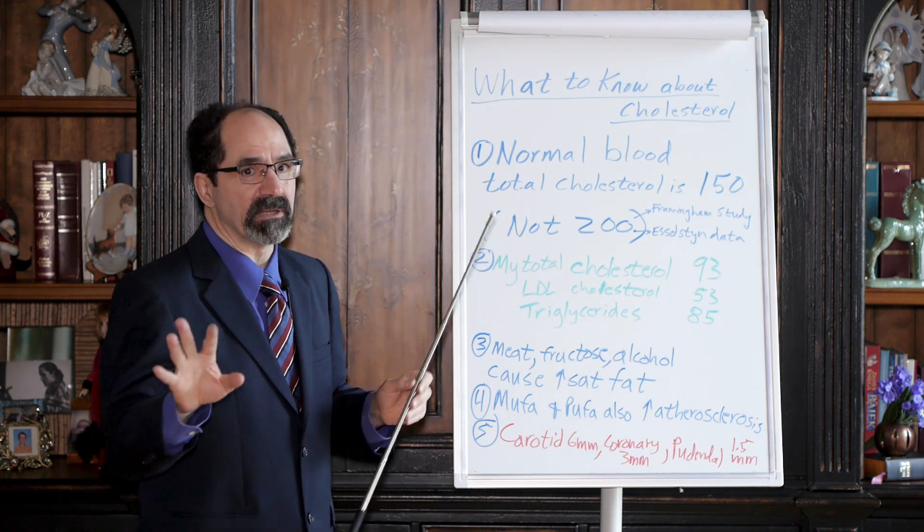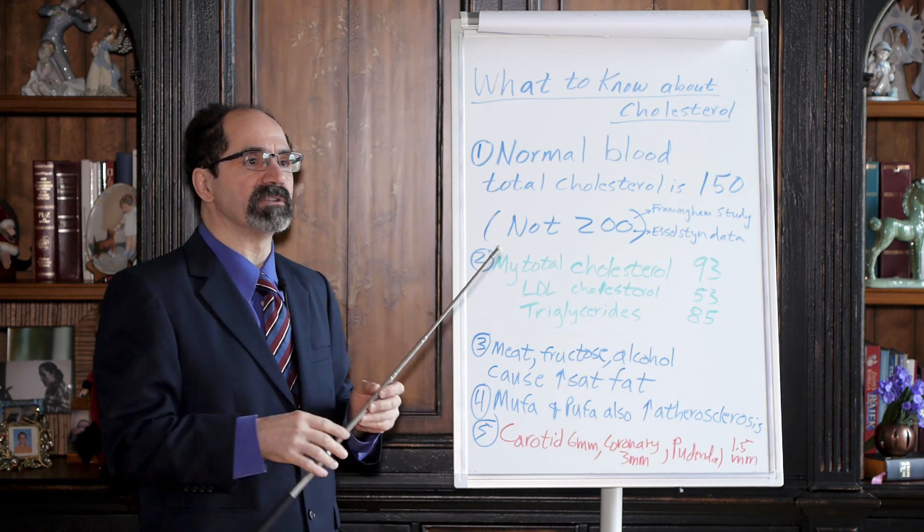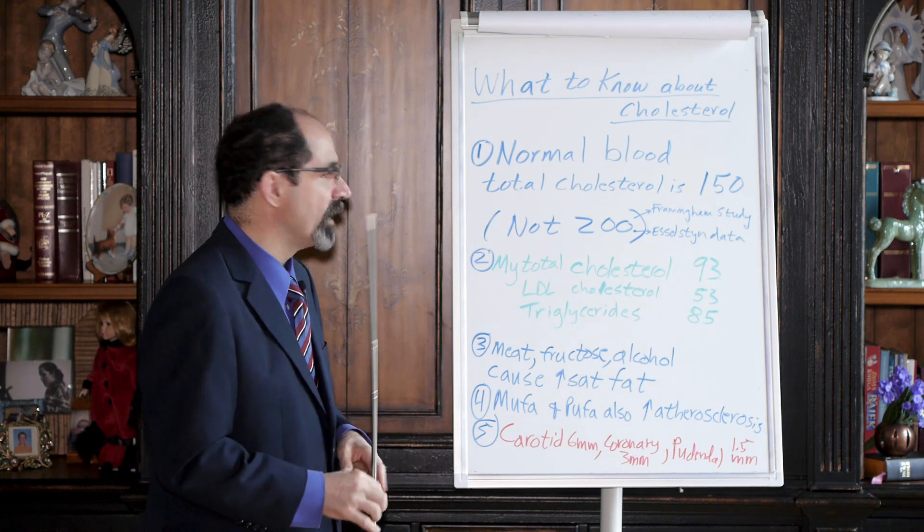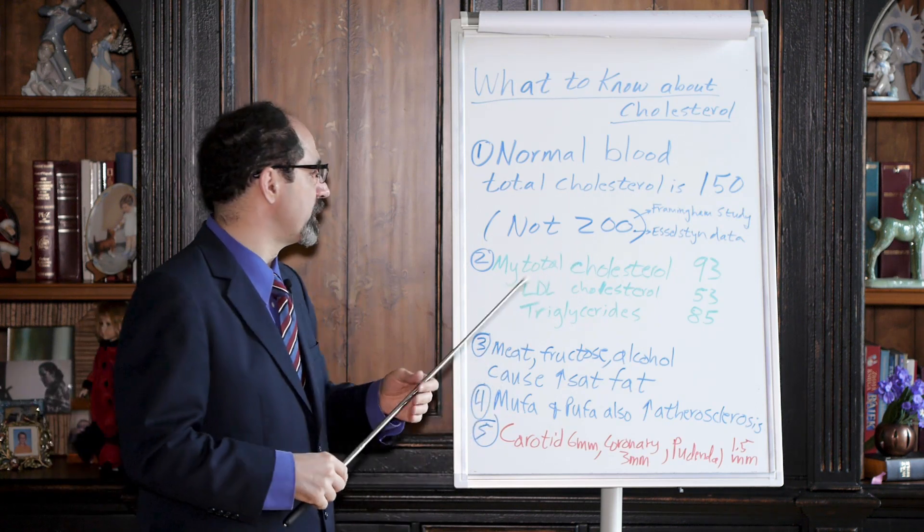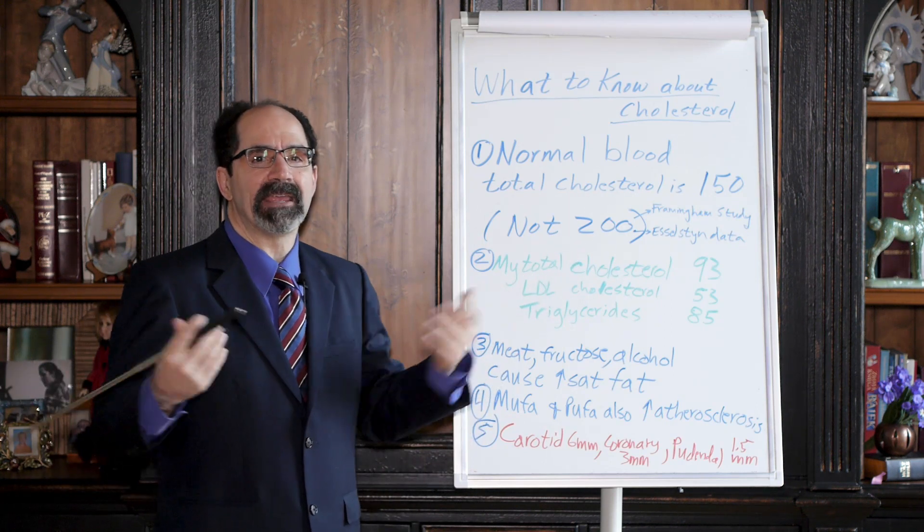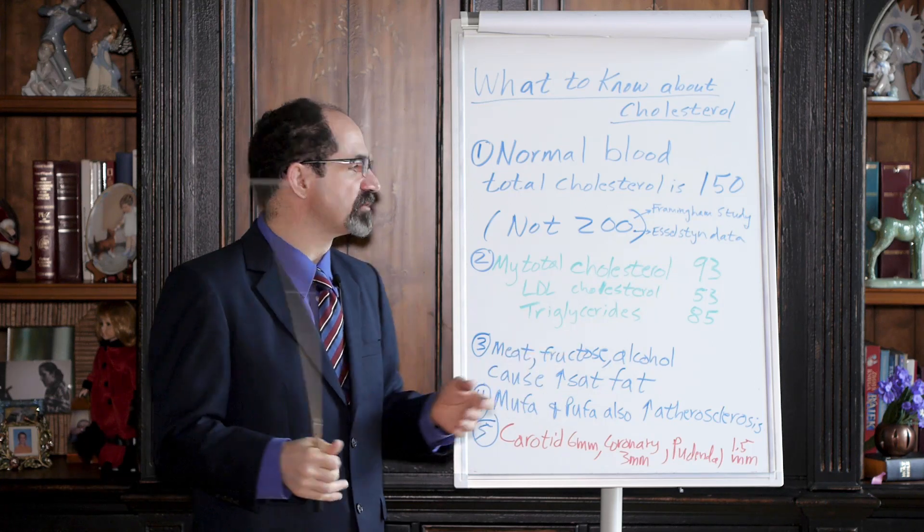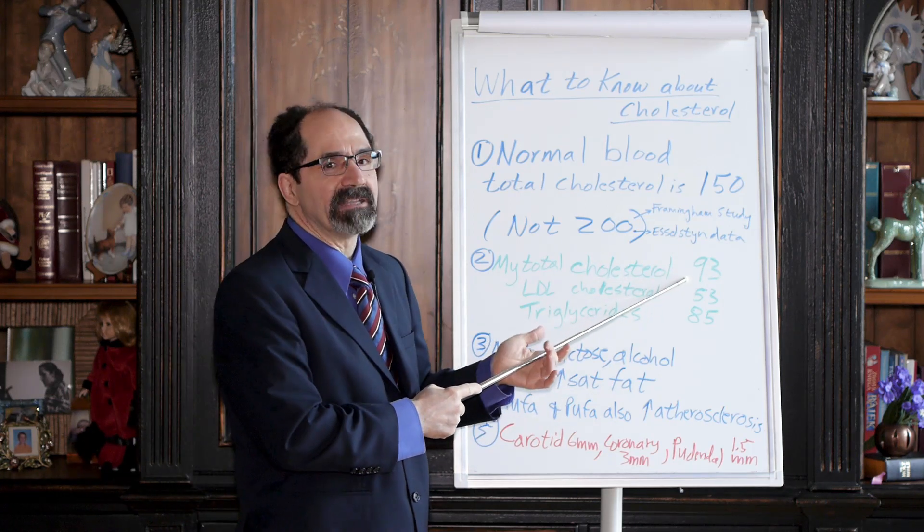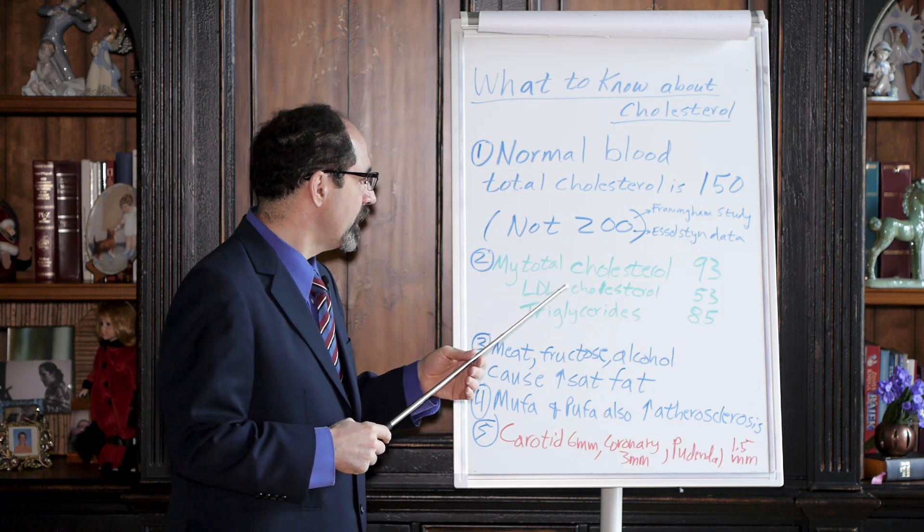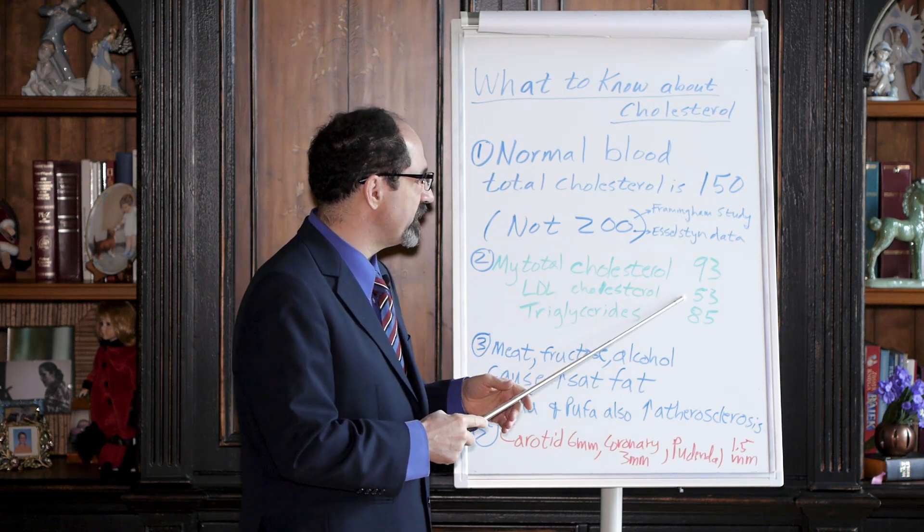But especially avoiding the meat—that's the most important thing. Number two is avoiding the oil. Other things help, like lowering your sodium. What are my total cholesterol numbers? Just to give you an idea of a plant-based eater: my total cholesterol is 93, my LDL cholesterol is 53, triglycerides 85.